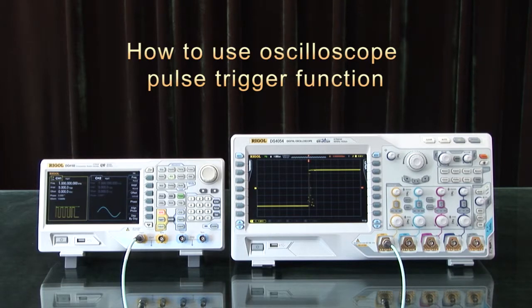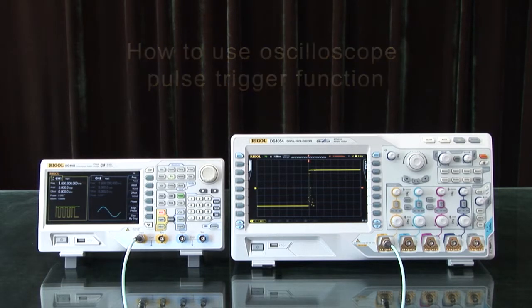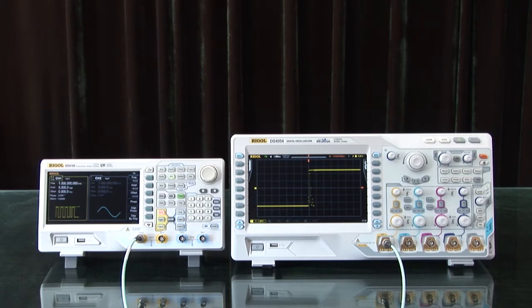Many common problems can be solved easily using the edge trigger of your scope, but sometimes a more complicated trigger mode, such as pulse triggering, can shorten the troubleshooting cycle.